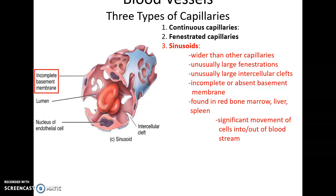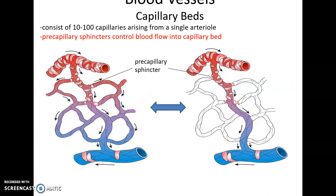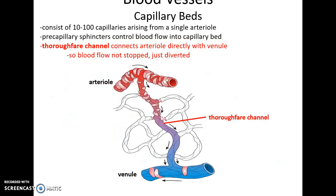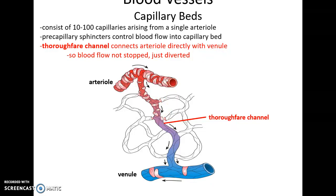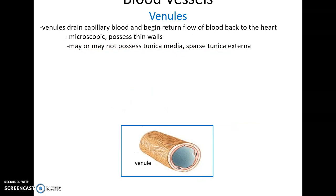Capillary beds consist of 10 to 100 capillaries coming off of a single meta-arteriole, and blood flow into them is controlled by the pre-capillary sphincters. There is also a throughfare channel that goes straight from the meta-arteriole to the venule, bypassing the capillaries altogether so that blood flow is diverted rather than stopped.